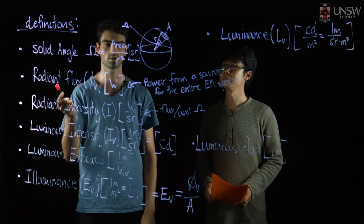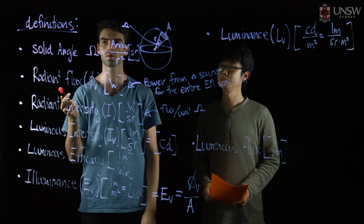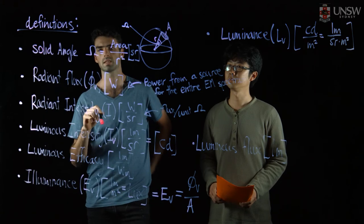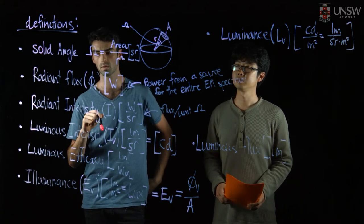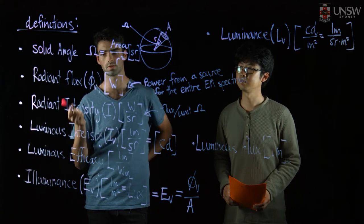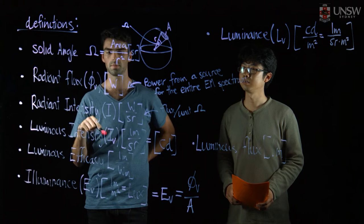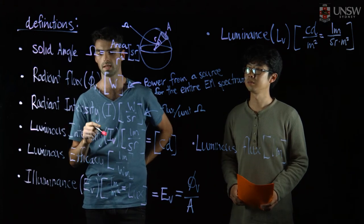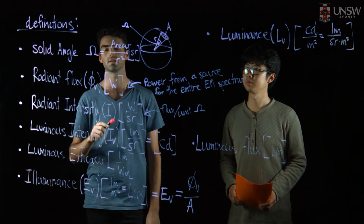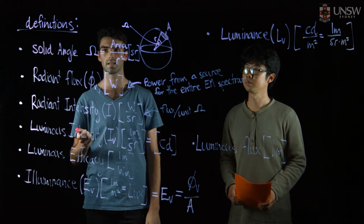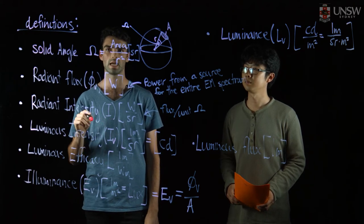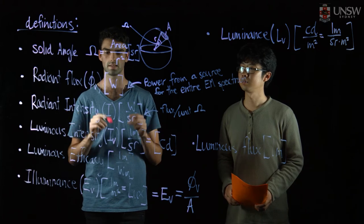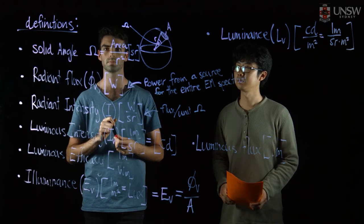We have radiant flux, which is the power from a source — the entire power that comes from the entire electromagnetic spectrum from that source. We have radiant intensity, which is the flux divided by the unit solid angle. We have luminous intensity, which is a little bit different because it is a subsection of the entire EM spectrum — just the visible light proportion of the spectrum.